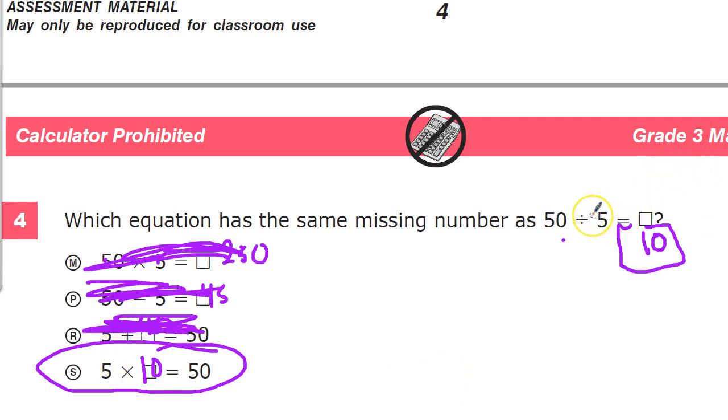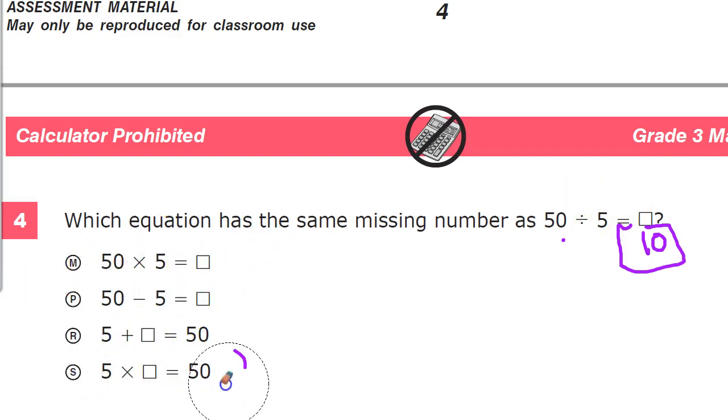If you have division and you're looking for the reverse, it's probably going to be multiplication, which could have eliminated the middle two. P and R would have been out even under those conditions, and then the idea that it could be 10, and if you have 50 times 5, that's way more, so that's unlikely to be it. This was the only reasonable choice. So again, the answer to number four is S.